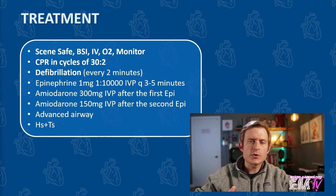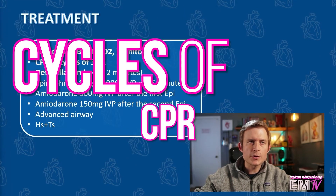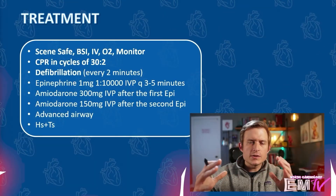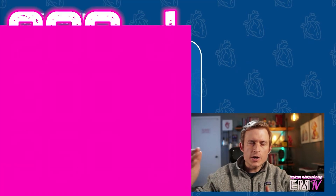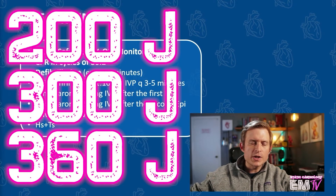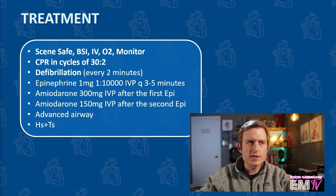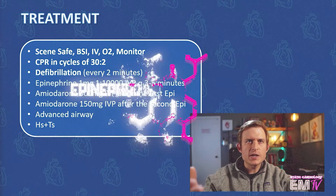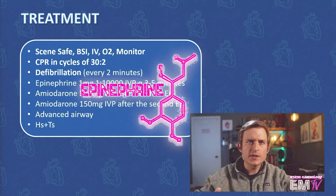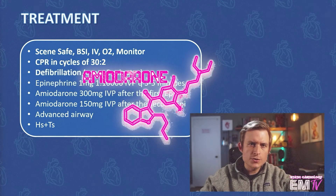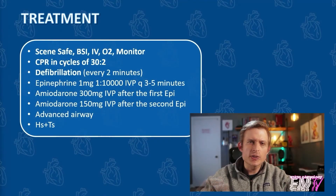For this patient, I'm going to be performing CPR in cycles of 30 to 2. I'm going to be defibrillating every two minutes — going from 200 up to a maximum of 360 joules, or starting and staying at 360 joules, or starting and staying at 200; they're all technically correct per ACLS guidelines. I'll be giving epinephrine 1 milligram of 1 to 10,000 every three to five minutes. After the first dose of epinephrine, I'll be giving amiodarone 300 milligrams IV push. Then after the second dose of epinephrine, I'll give another dose of amiodarone, which is 150 milligrams.